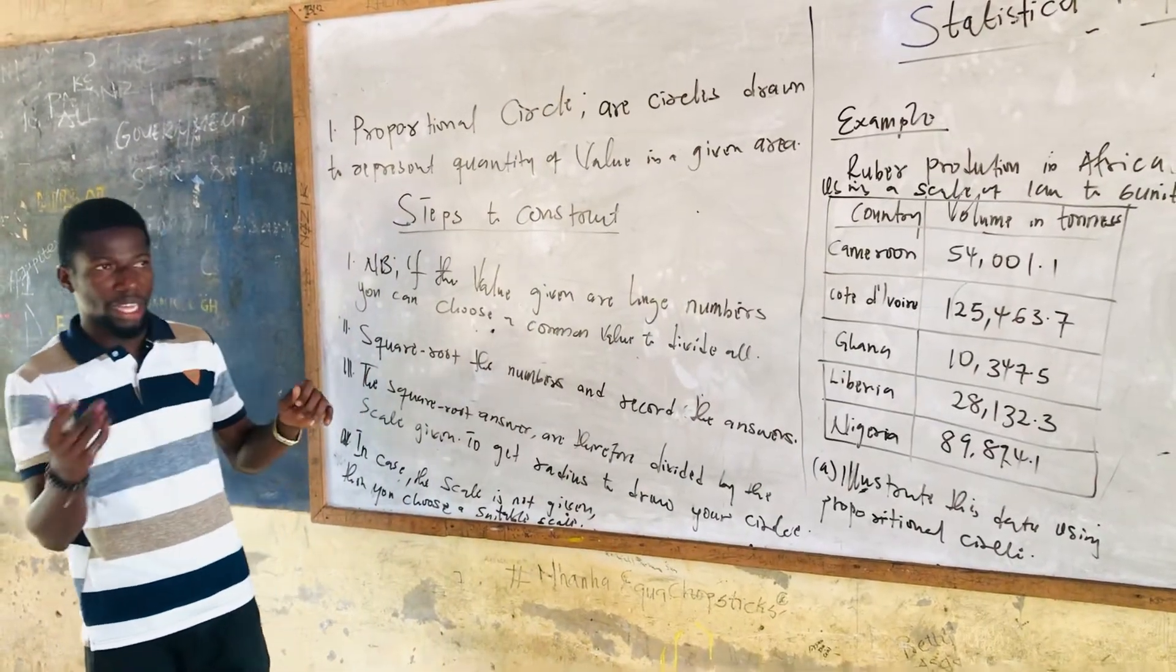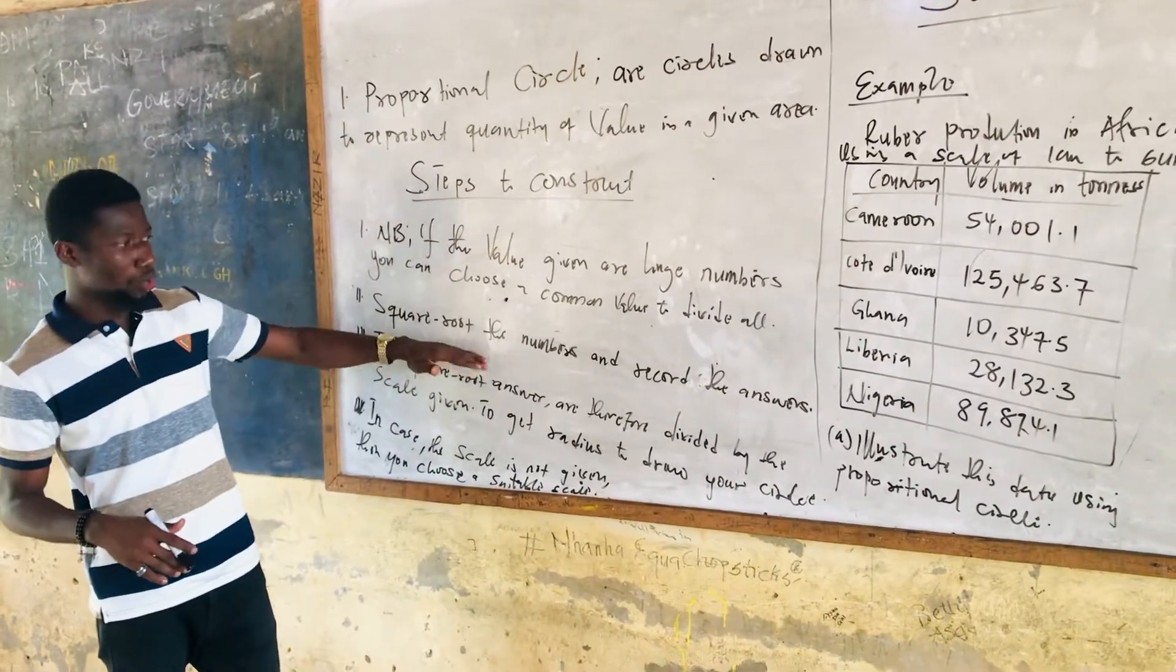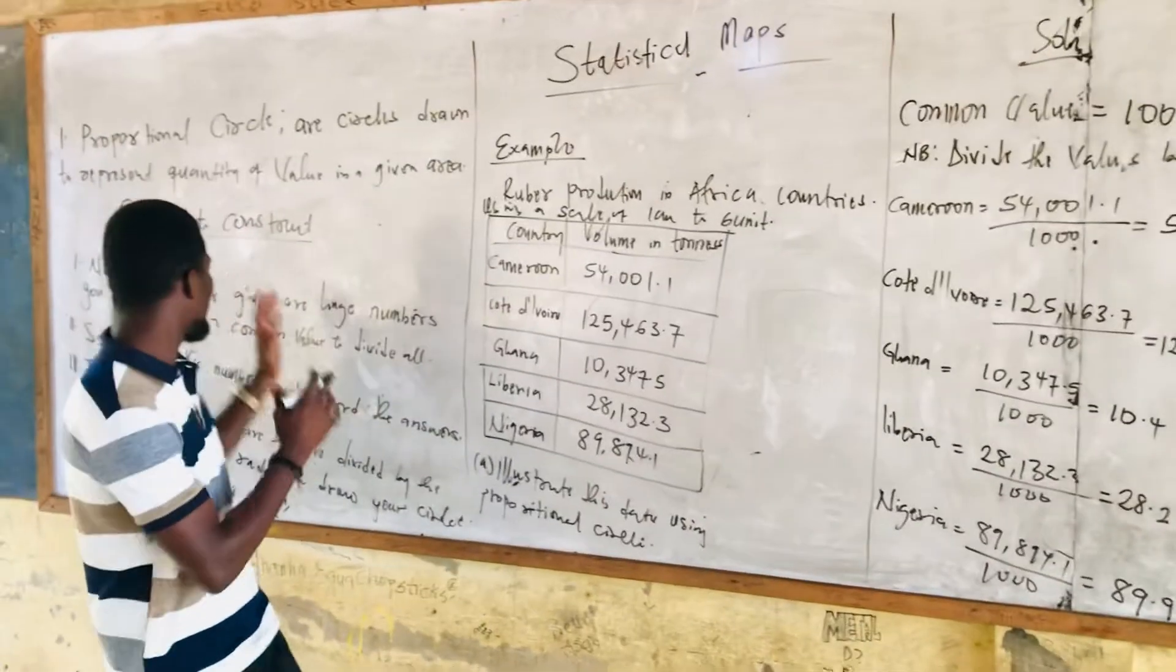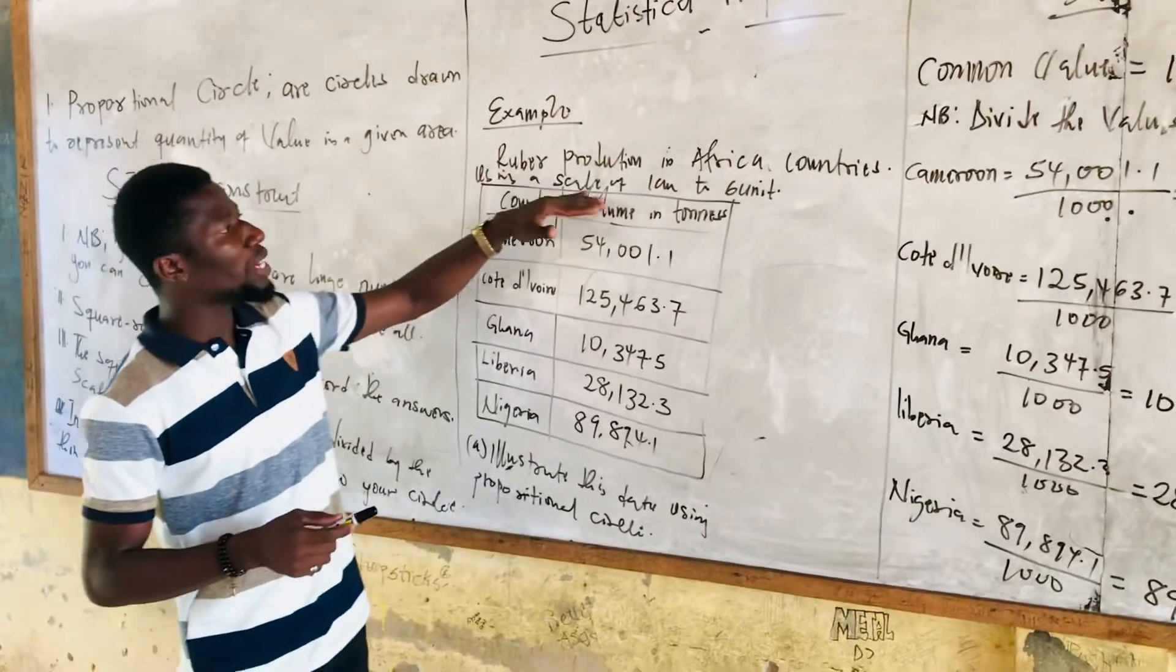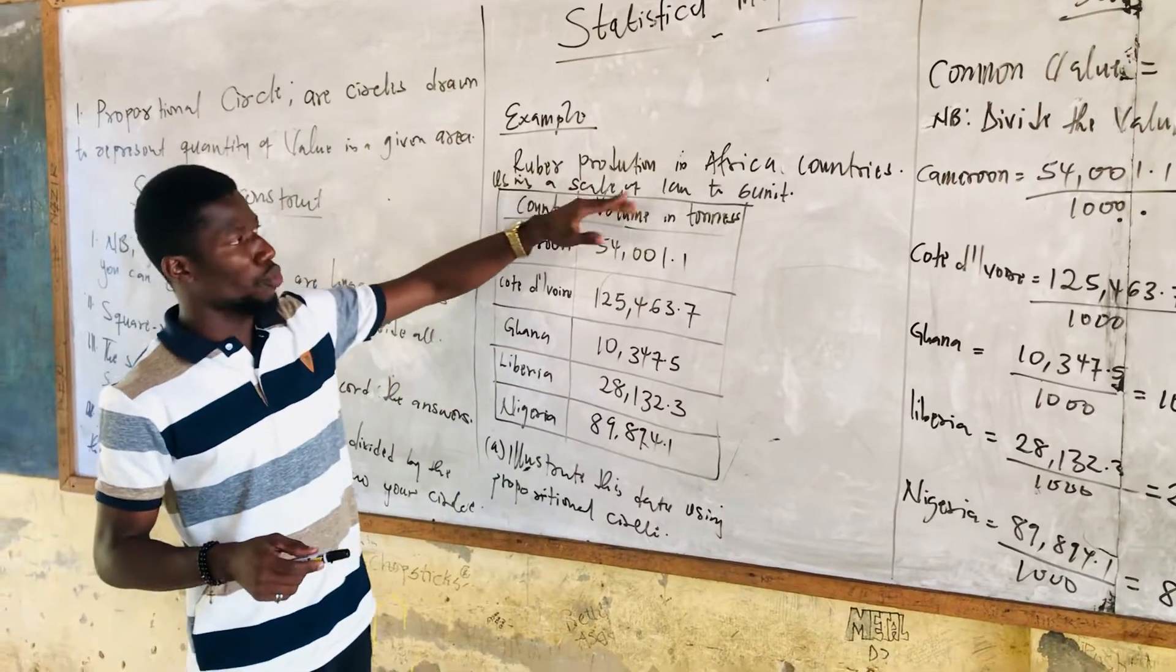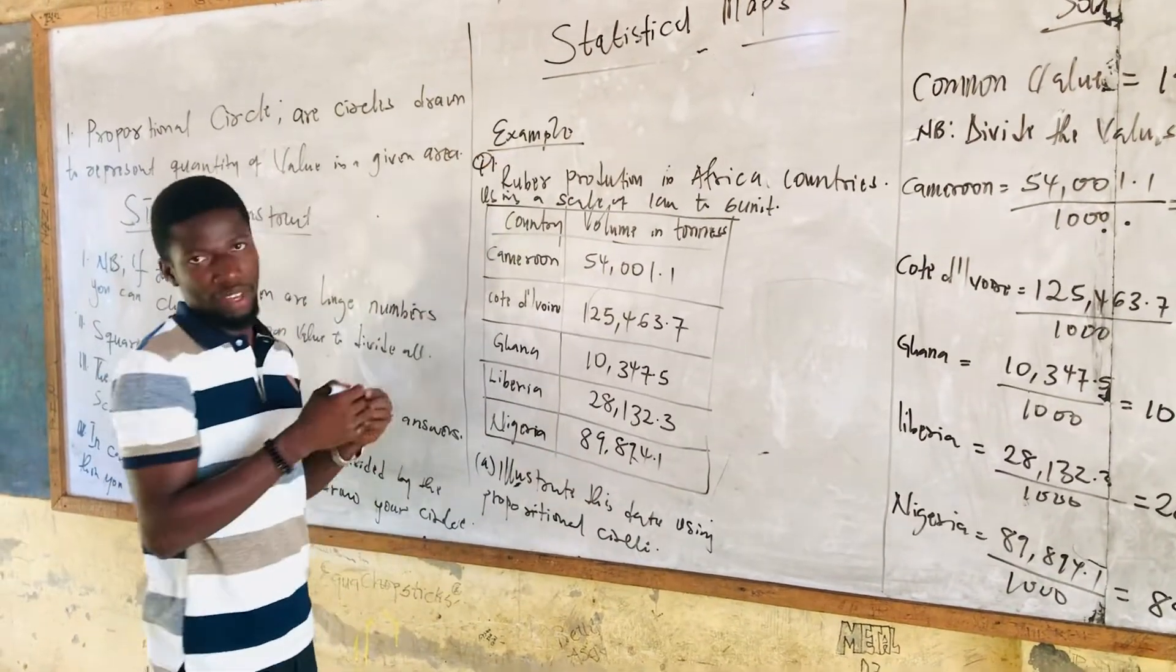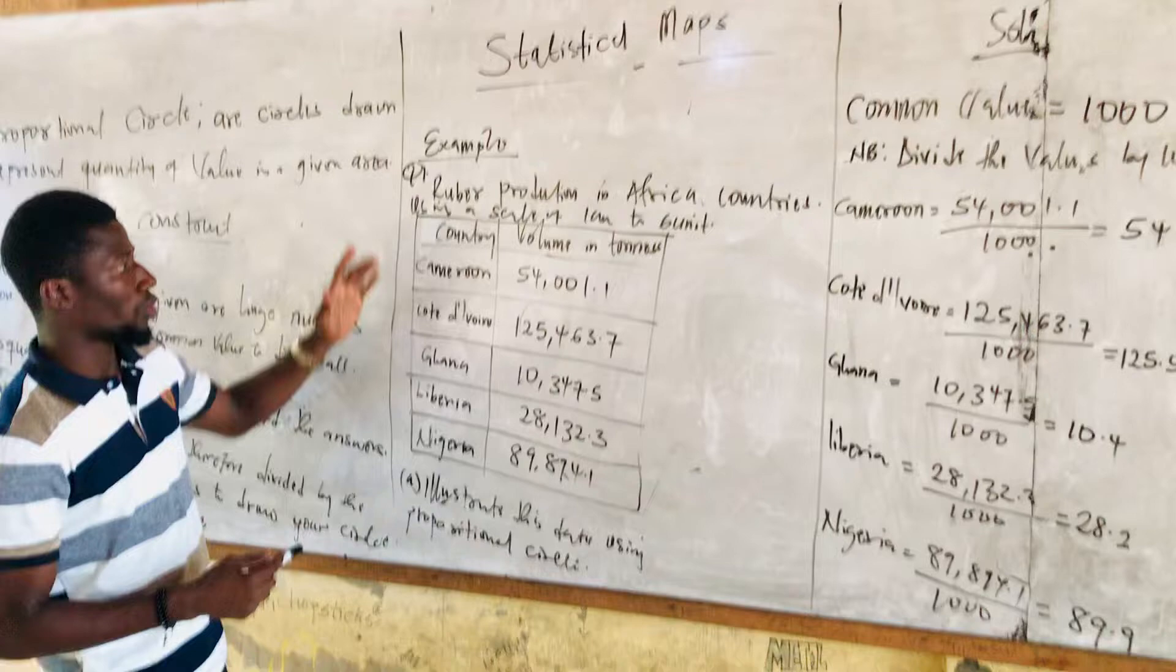Let's take an example and see how we can execute the steps we have laid out. For example, rubber production in Africa, countries, using a scale of 1cm to 6 feet. Per this question, our scale is given. The scale is given as 1cm to 6 feet.